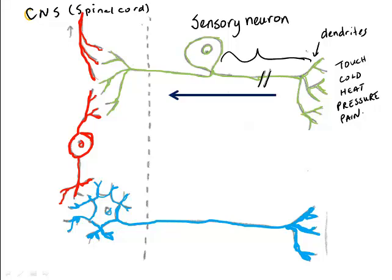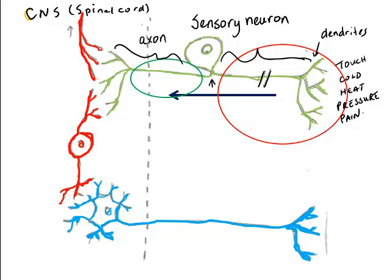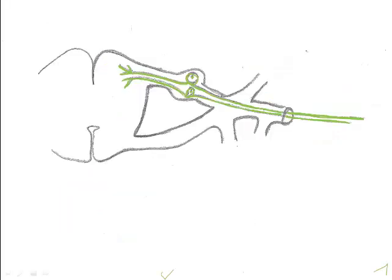Sensory neurons also have short axons. This puts the cell body very close to the central nervous system. Here we see the dendrite circled in red and the axon circled in green. When sensory neurons form nerves, cell bodies cluster to form a ganglion near the central nervous system.